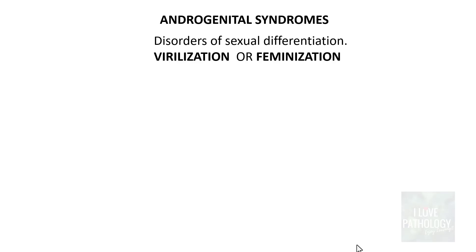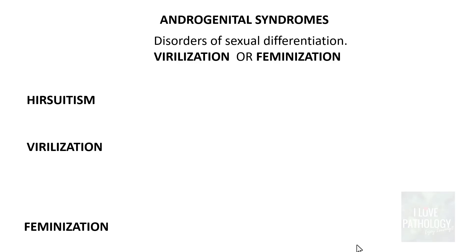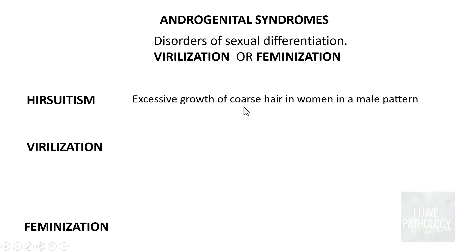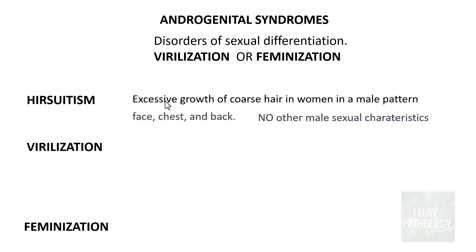Now let us see what androgenital syndromes are. They are basically disorders of sexual differentiation, the most important ones being virilization or feminization. To understand this, let us clarify the concepts of hirsutism, virilization, and feminization. Hirsutism means excessive growth of coarse hair in women in a male pattern — most often on the face, chest, and back — which is normally not seen in females, with no other male sexual characteristics.